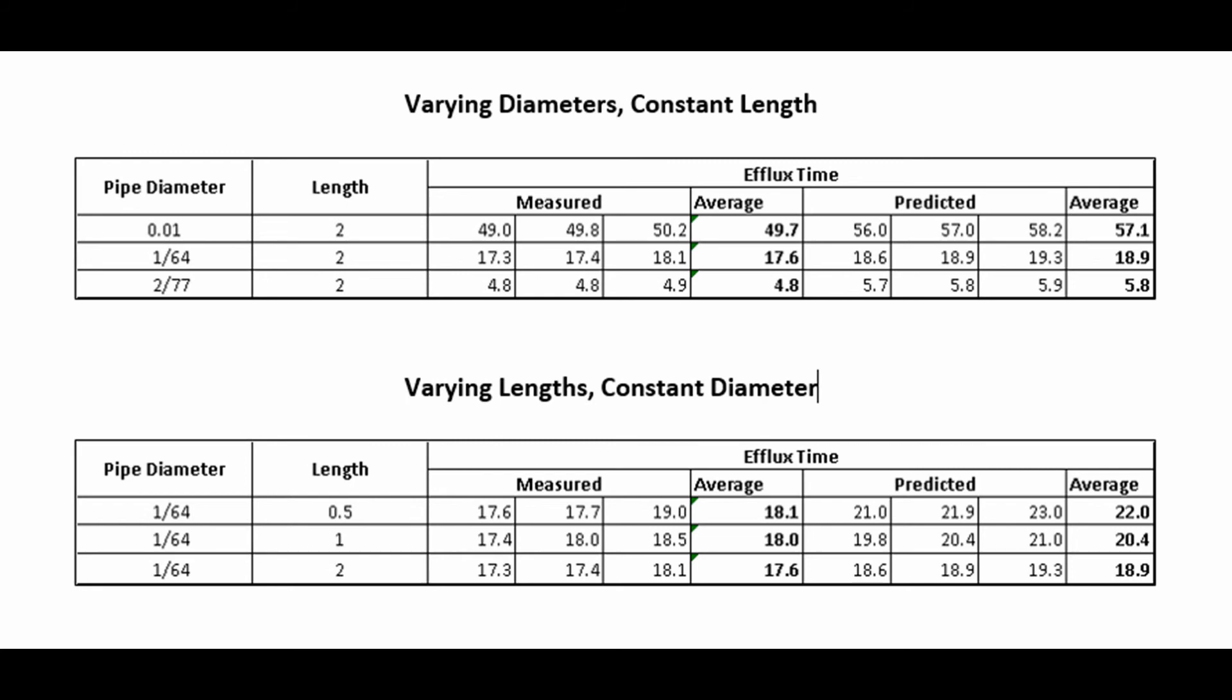The second table shows the pipes with a constant diameter and varying length. These values vary far less than the previous ones. It can be concluded that pipe length has much less of an effect on efflux time than pipe diameter.